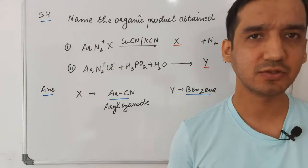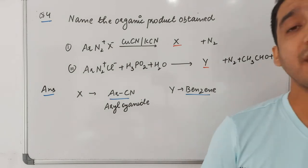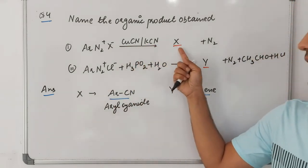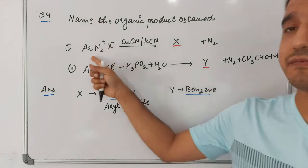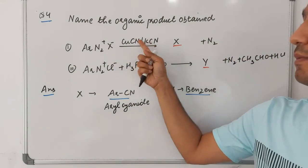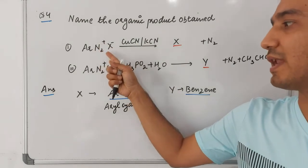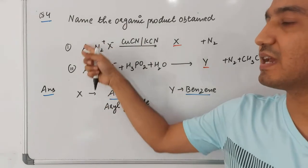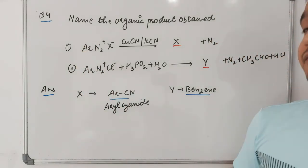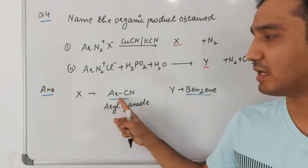Next, name the organic product formed when benzene diazonium salt (ArN₂⁺X⁻) is reacted with CuCN in the presence of KCN. Here, CN will displace N₂, and CN gets attached to the aryl group, resulting in the formation of ArCN, which is called aryl cyanide.